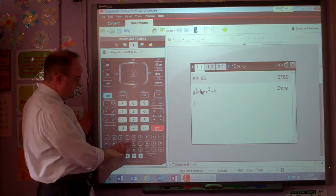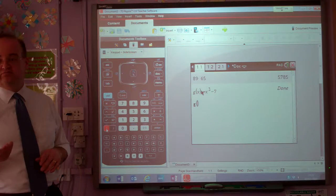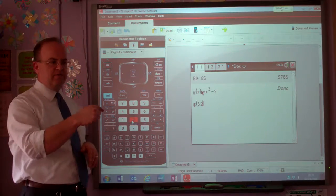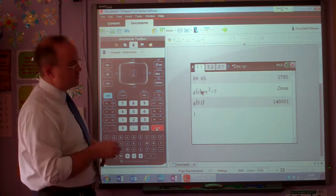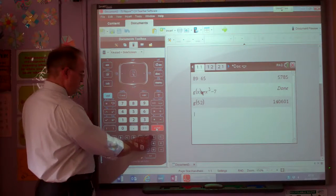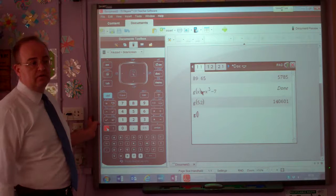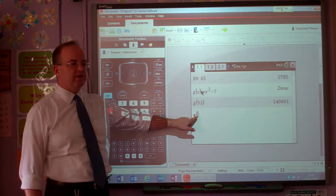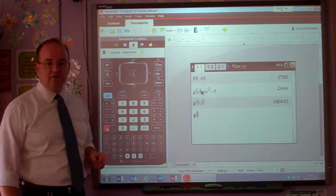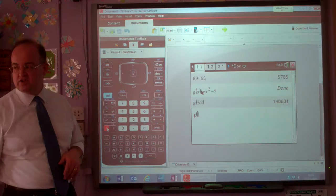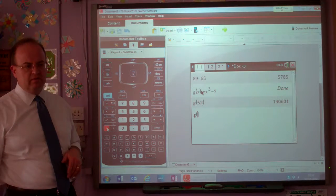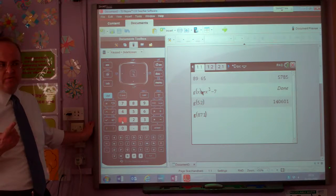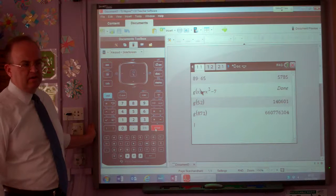So I can ask it to work out the value of that function. G of 52. So what's the calculator going to do for me? It's going to be 52 cubed minus 7. So, 140,601. Another one? G of... One nice thing to notice is that the calculator realizes that if you've opened the bracket, you're going to have to close the bracket at some point. So it kind of puts it there ready for you. G of, come on, be adventurous. 871. So what's the calculator going to do? 871 cubed minus 7. That's a big number, isn't it?